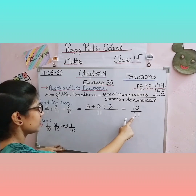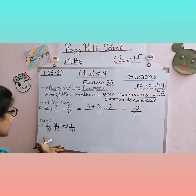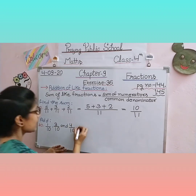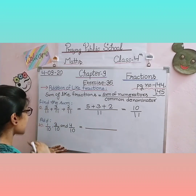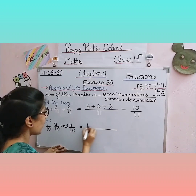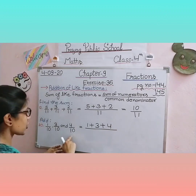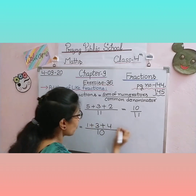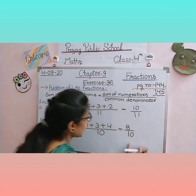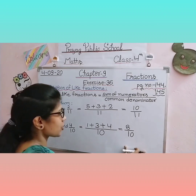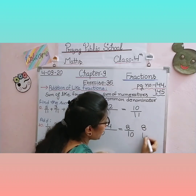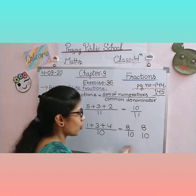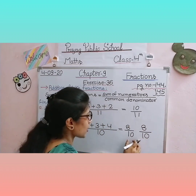Next question: 1/10 + 3/10 + 4/10. Isse bhi hum apne formula pe rakhenge. Numerator kya hoga — sum of numerators: 1 + 3 + 4. Denominator: common denominator 10. 1 + 3 = 4, 4 + 4 = 8. Answer: 8 upon 10. Dhyan rakhiye — numerator aur denominator ke beech mein slash zaroor lagaate hain, tabhi yeh fraction hota hai. Be careful.